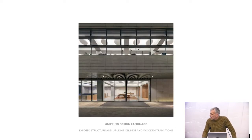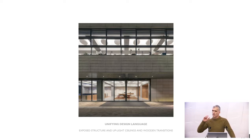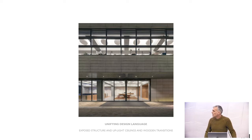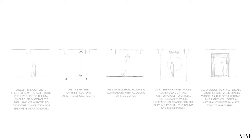We started answering that question by trying to come up with a system that would equalize the different buildings over the site. We first wanted to just adopt the building. The first image on the left side shows us adopting the building — it's a gray shell building, that's the start.